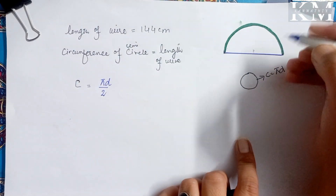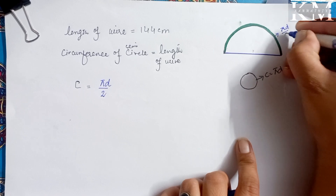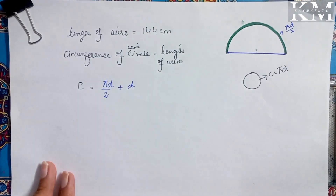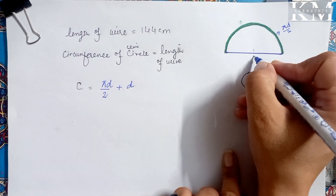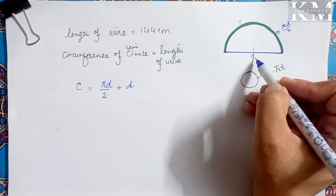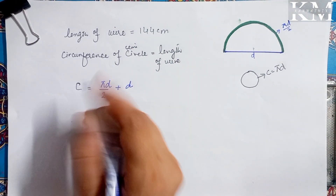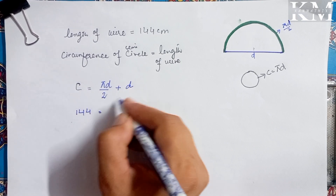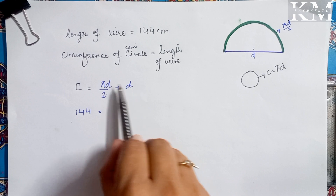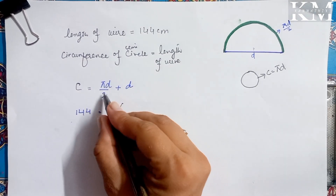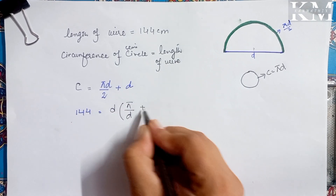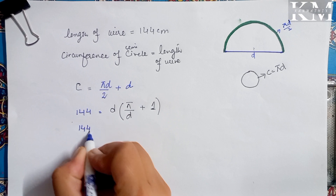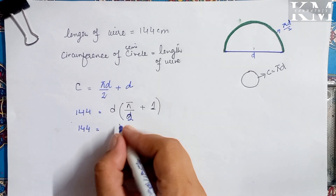Now for the whole figure — from here to here the curved part is πd/2. But the diameter is also included in this figure since it forms the straight edge of the semi-circle. So we will add d to it. This gives us the formula for the whole figure: πd/2 + d. We have taken d as common, so inside the bracket we have pi/2 + 1. From here you can easily find the diameter.